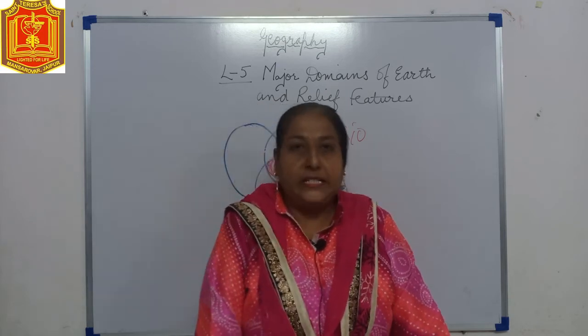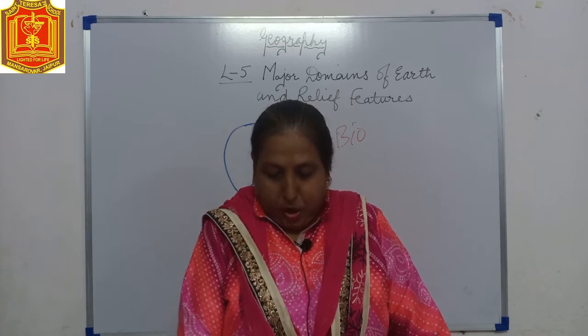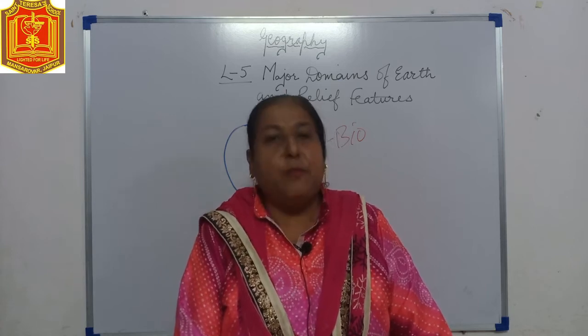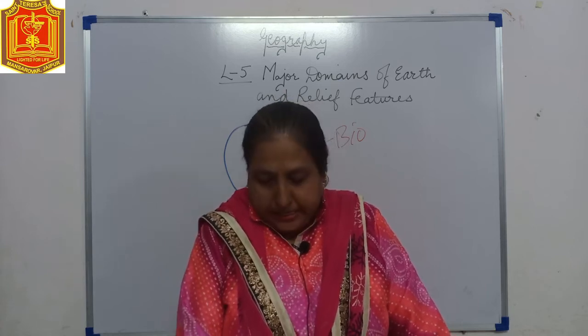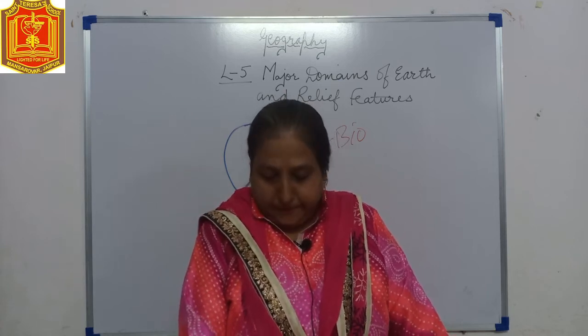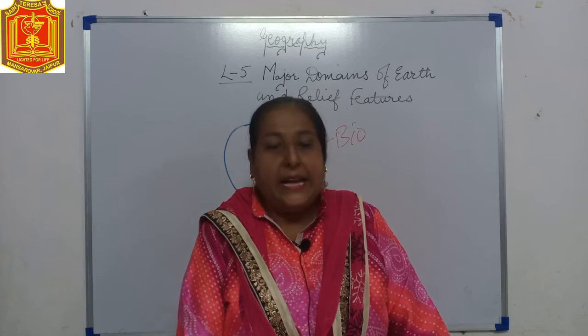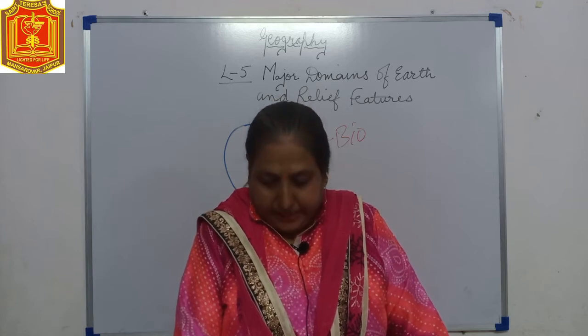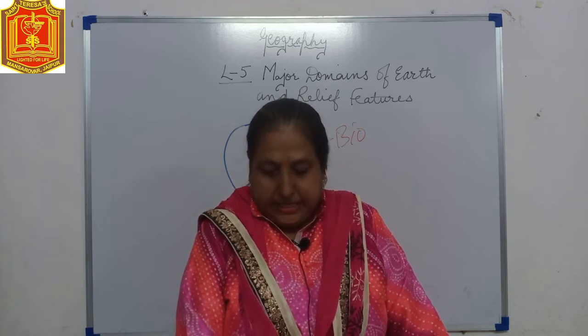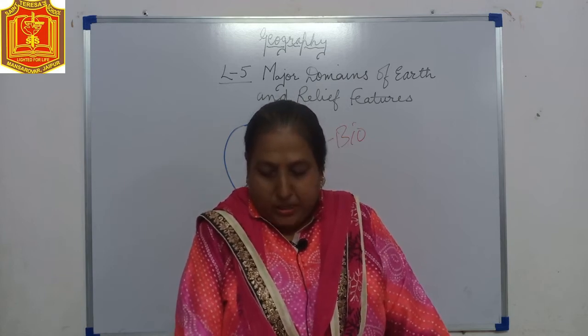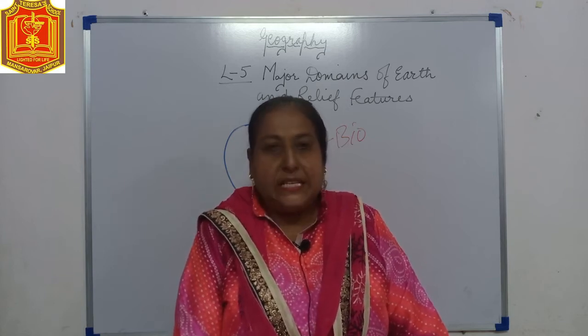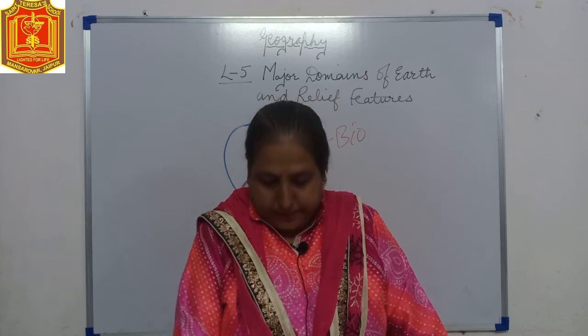Next is Australia. Australia is the smallest continent on the earth. It is sometimes called an island continent because it is surrounded on all sides by sea and oceans.